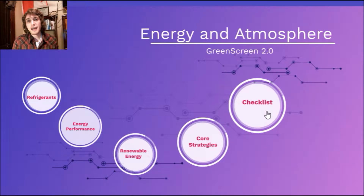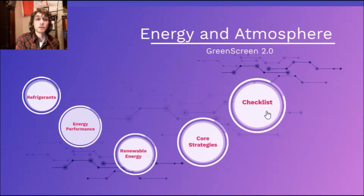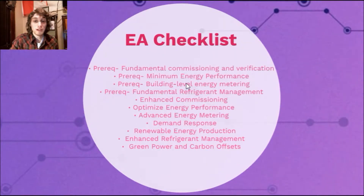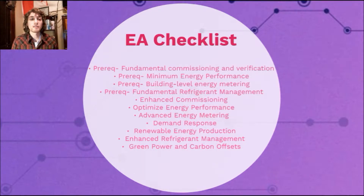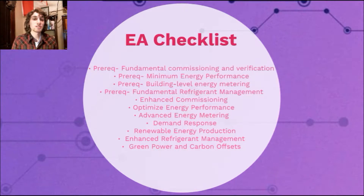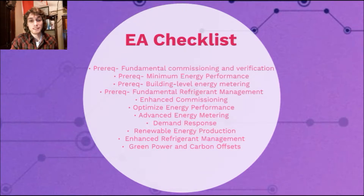This follows really every LEED category — it starts with establishing a baseline, then reducing our demand, and then ends with tracking our progress. We can see that right here in the checklist where the prerequisites are establishing that baseline, and the same on the bottom for the actual credits: fundamental commissioning, enhanced commissioning, minimum performance, and optimized energy performance. The EA category is one of the most important, if not the most important, because LEED V4 was really designed to reduce our impact on climate change, and credits are awarded due to the most impact — that's why EA has the most credits in it.